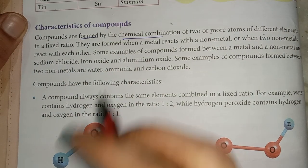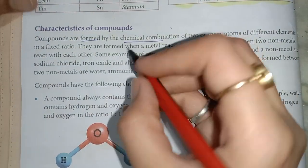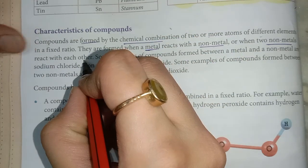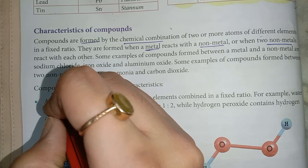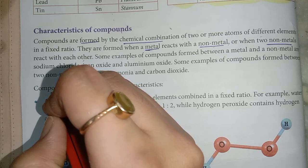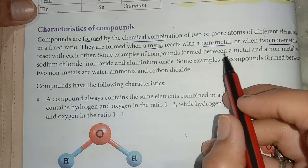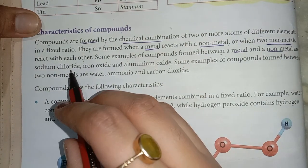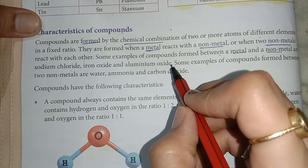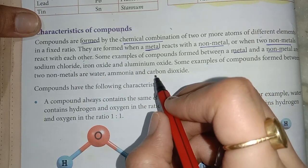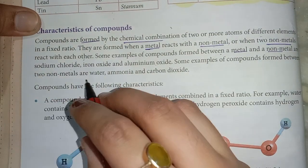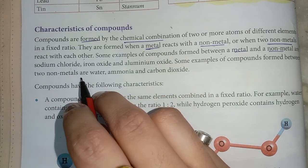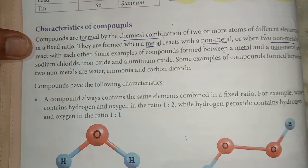Compounds are formed when a metal reacts with a non-metal, or when two non-metals react with each other. Some examples of compounds formed between two non-metals are water, ammonia, and carbon dioxide.